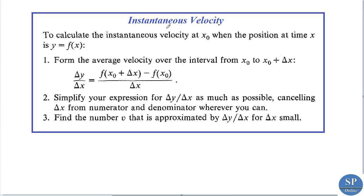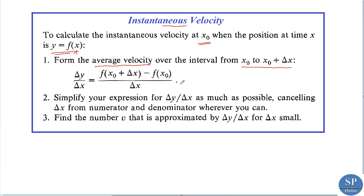Now, how do we find the instantaneous velocity? To find the instantaneous velocity at a given time x₀, where y = f(x) is the position of the particle at time x, we first need to find the average velocity over the interval x₀ to x₀ + Δx. That is: Δy/Δx = [f(x₀ + Δx) − f(x₀)] / Δx, which we already discussed in the previous lecture.